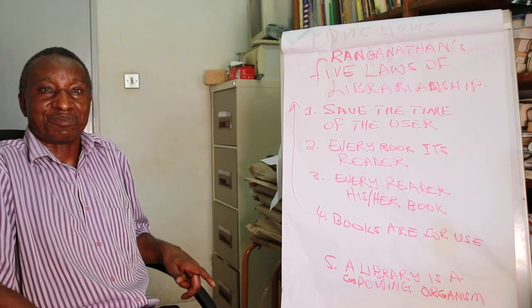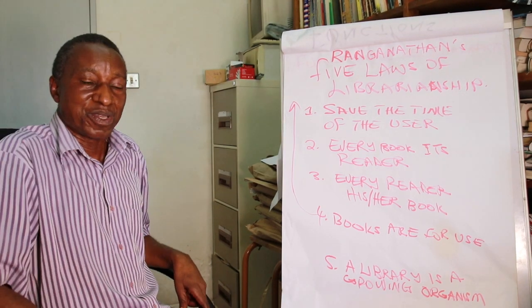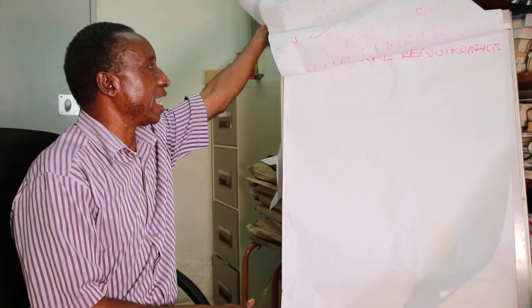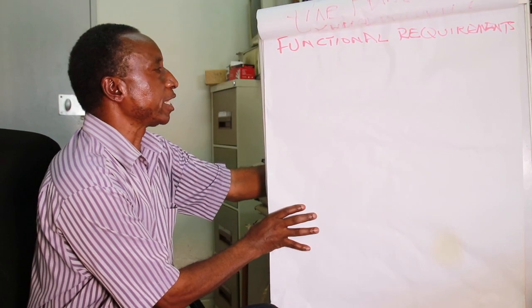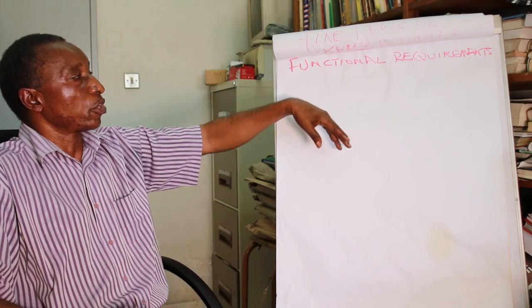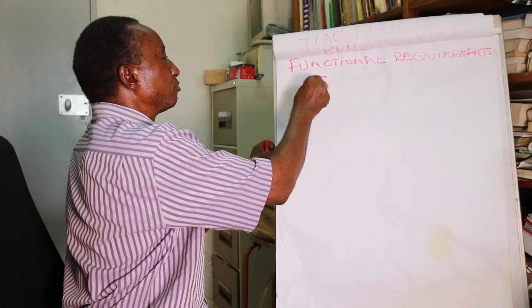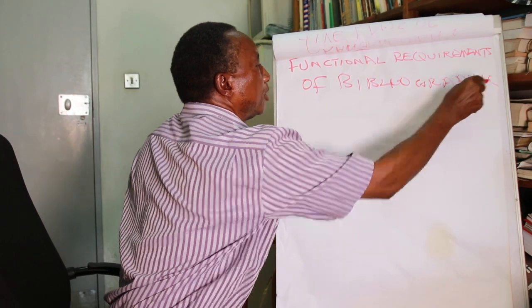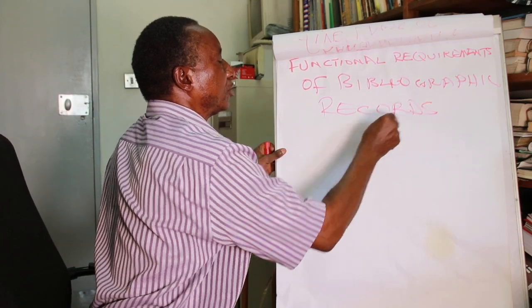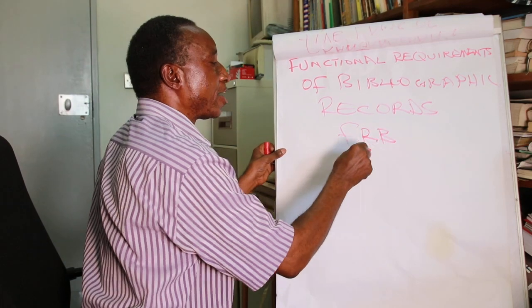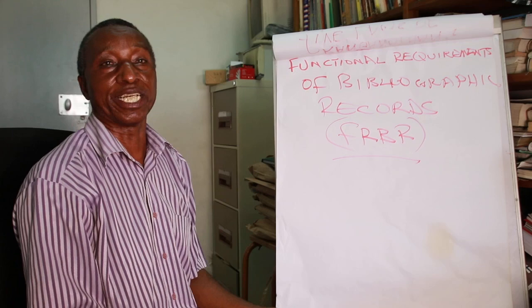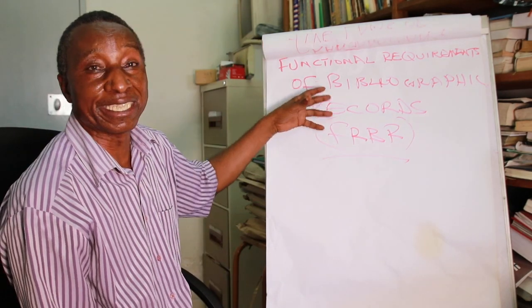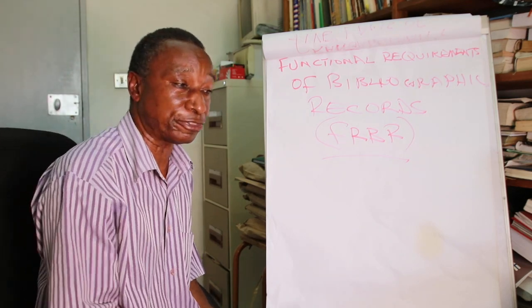How about looking at the catalog from the perspective of the functional requirements for bibliographic records as set out by IFLA? IFLA and other key stakeholders have come up with what is known as Functional Requirements for Bibliographic Records, written in short as FRBR, or pronounced as 'Feber.' These were defined as the requirements of any bibliographic record — the records you create when cataloging books and other information resources.